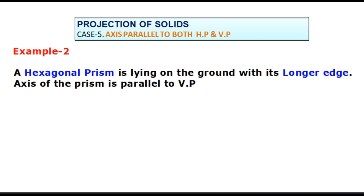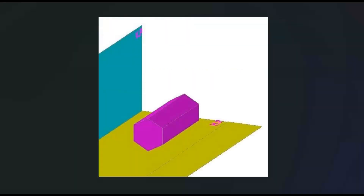In another example, a hexagonal prism is lying on the ground with its long ridge. The axis of the prism is parallel to VP. In this case also, the axis is parallel to both the planes, so we should start from the side view.